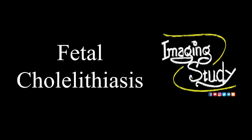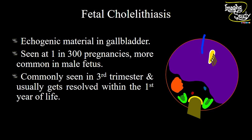Today we are going to start with fetal cholelithiasis. We are already familiar with adult cholelithiasis but fetal cholelithiasis term may not be very common to most people. We can visualize the fetal gallbladder on ultrasound. In fetal cholelithiasis, you will find echogenic material within the gallbladder. It might be sludge or stone, which is quite confusing in gestational age. Fetal gallstone is seen around 1 in 300 pregnancies and it's more common in male fetuses, though there are many controversies regarding these points.